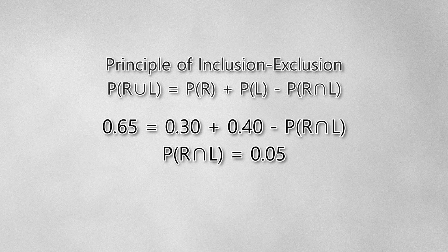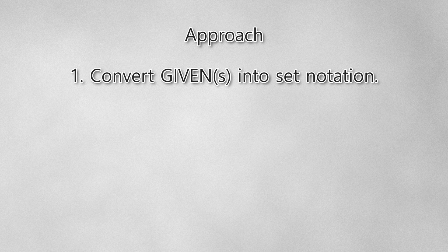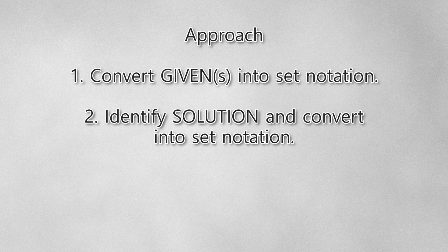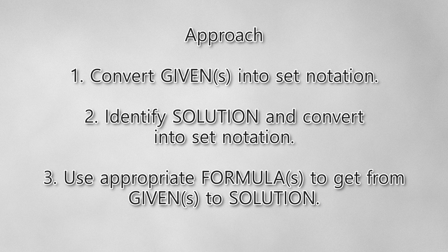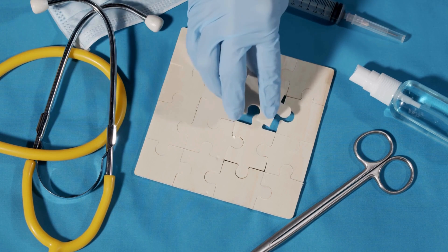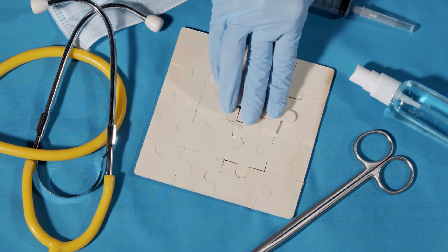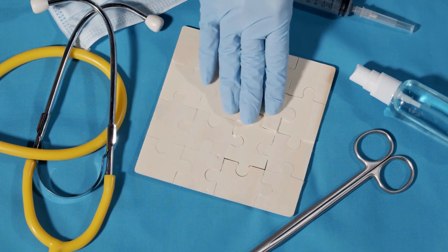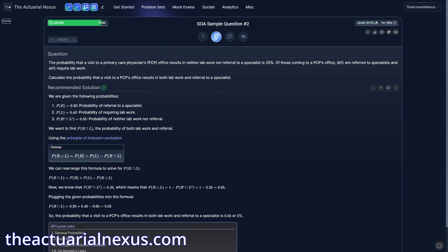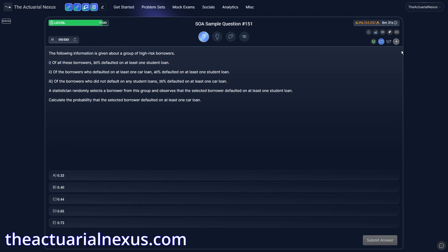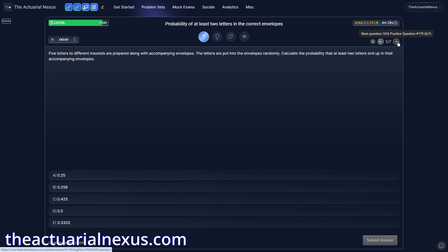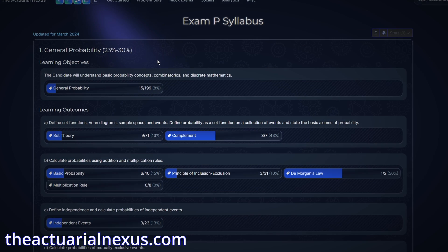We calculate the probability of R intersection L, which is 5%. To summarize the approach: first, take the given information and convert it into set notation. Then identify what the question is asking for and convert that into set notation. Finally, use the appropriate formulas to get from what was given to what was asked. The approach is straightforward, but if this is your first time working with these principles, it can definitely be overwhelming. Once you know all the different formulas, it's really just a matter of plugging and chugging. The most common advice to prepare for exam P is to go through a ton of practice questions — after working through hundreds, a lot of this may become intuitive.